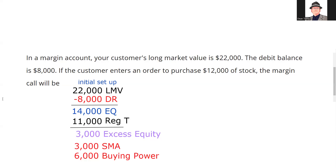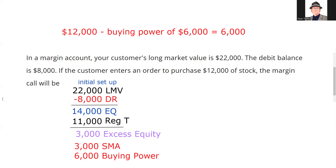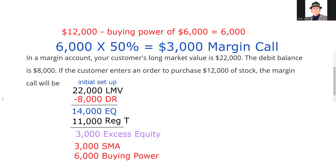So that's where it sits right now. You should always do the initial setup before taking on the question. Now: if the customer enters an order to purchase $12,000 worth of stock, the margin call will be — as a margin clerk — of the $12,000 you want to purchase, buying power will take care of $6,000. That's what buying power means: you can buy stock with no required deposit for that portion. So we're left with $6,000, and you need to send me half of that — half of six is $3,000. That is the answer: you have a $3,000 margin call.